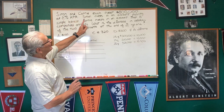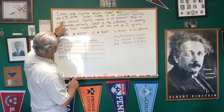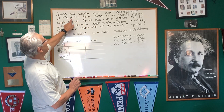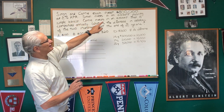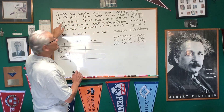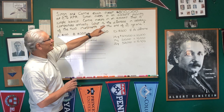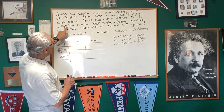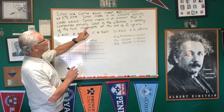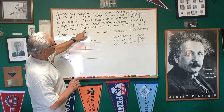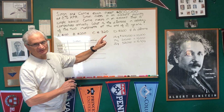Simon and Connie each invest $500,000 at 2% annual percentage rate. Simon invests in an account yielding simple interest. Connie invests in an account that is compounded annually. What is the difference in values of the two investments at the end of two years?